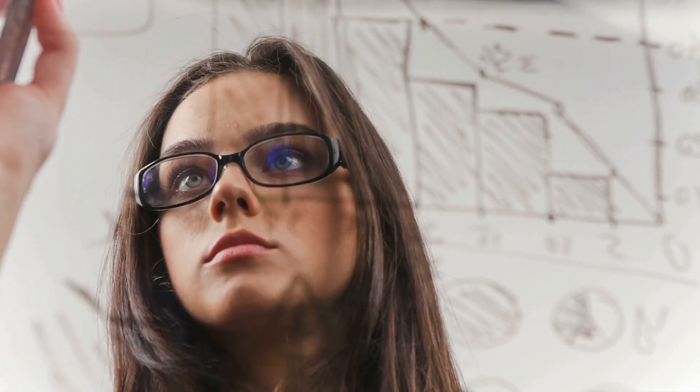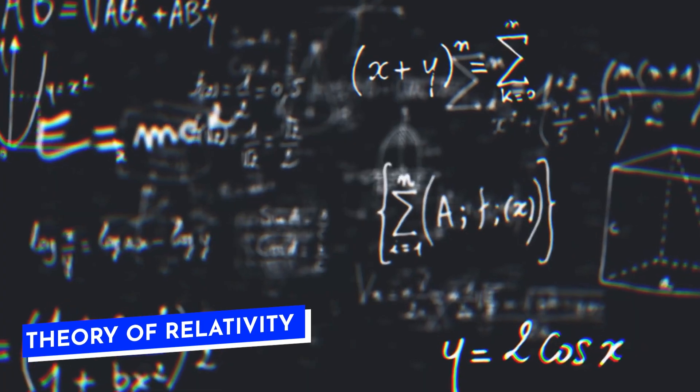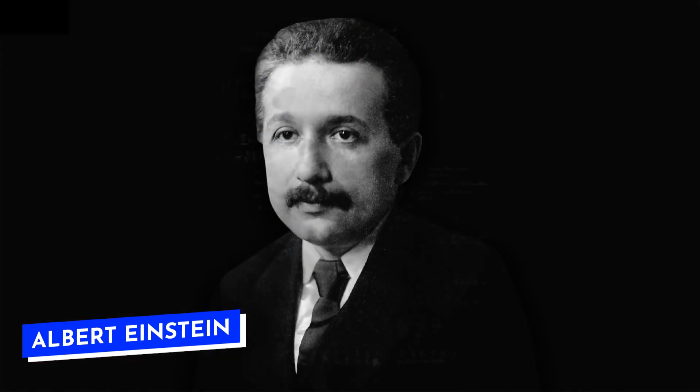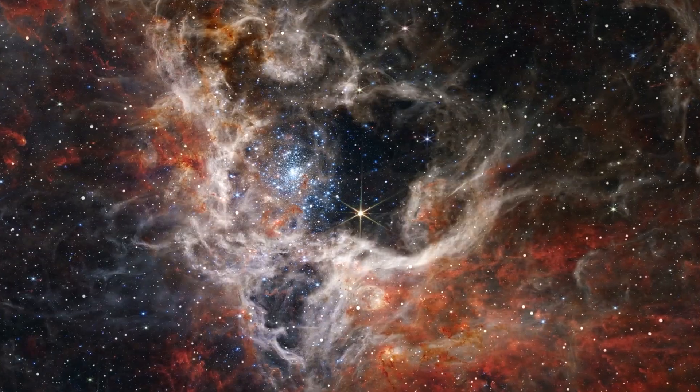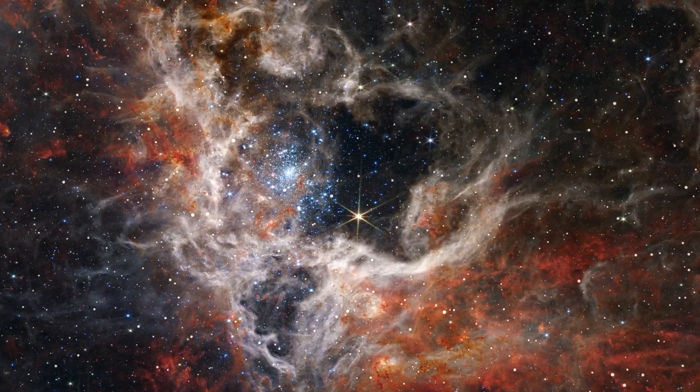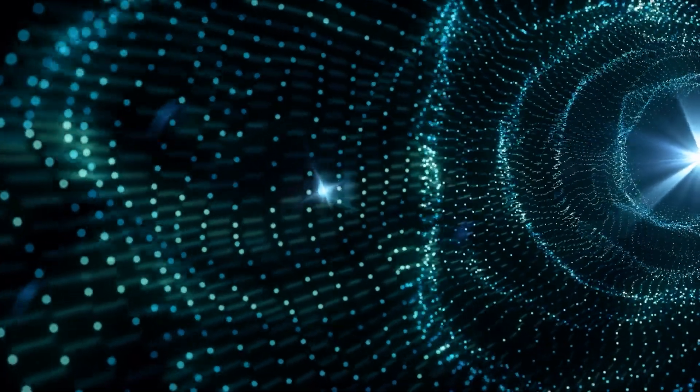Now, here's where it gets mind-bending. In the theory of relativity, Einstein proposed that space and time are part of the same thing called space-time. This means that time isn't separate from space. It's woven together with it.